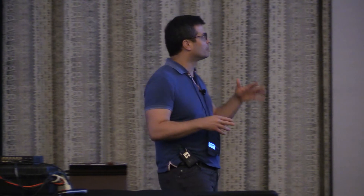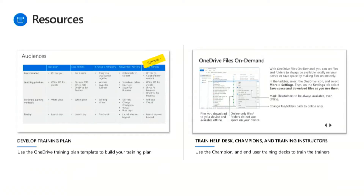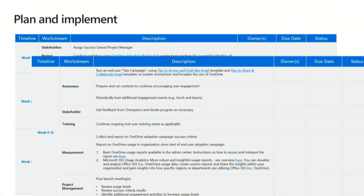To wrap up on training resources, check out the training plan on the adoption site. We have a training deck you can use to train the trainers, train end users, as well as your help desk. We have a whole plan that is loaded and ready to go — all you have to do is customize it. Customers really like how we include links to the resources needed to execute each item. It's organized by work stream and week by week, and you can add owners, due dates, and use it as a management tool to monitor status.